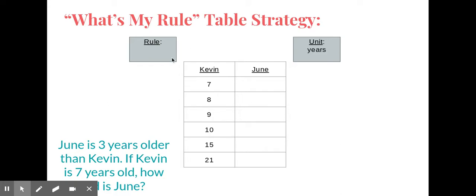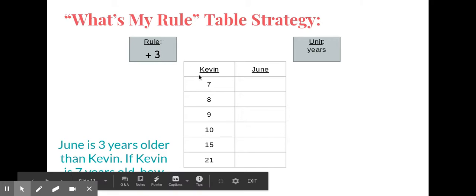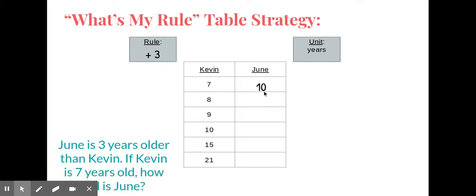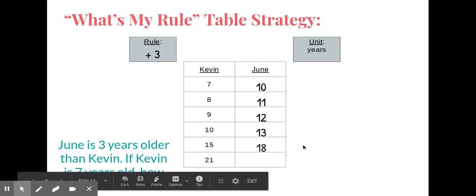The first thing I want to do is find a rule. If June is older, her number is going to be larger than Kevin's, which means I'm going to add. Since it says she's three years older, I'm going to add three to all of Kevin's ages. So if Kevin is seven and I add three, June is ten. When Kevin turns eight, June will turn eleven. If Kevin is nine, add three and we get twelve. Continuing: ten plus three is thirteen, fifteen plus three is eighteen, and twenty-one plus three is twenty-four. So if Kevin is twenty-one, June will be twenty-four.